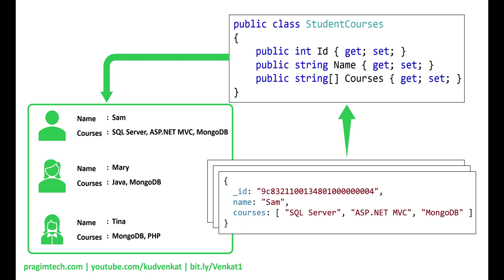Does this mean we cannot define relationships between documents in a non-relational database like MongoDB? Well, we can define relationships between documents in MongoDB, but these are usually kept to an absolute minimum. In most cases, we embed JSON documents inside another document. The obvious benefit is we have all the data we need in one place with no need to traverse multiple related documents. We can even completely normalize a schema in MongoDB just like a relational database — but if you want to normalize and use a non-relational database like a relational database, why not just use a relational database like SQL Server or Oracle?